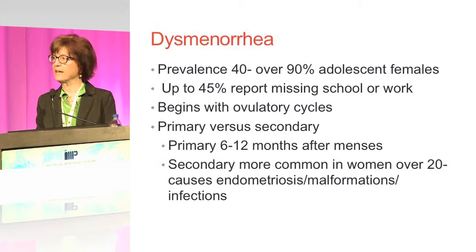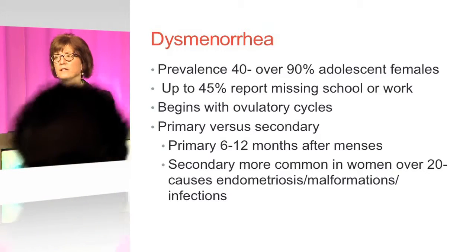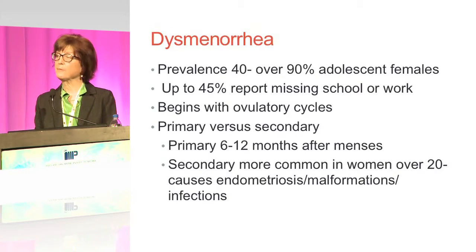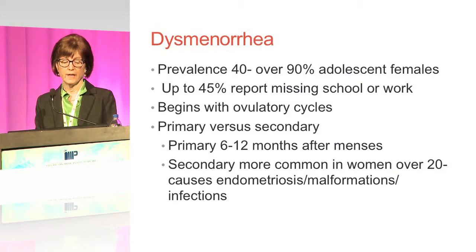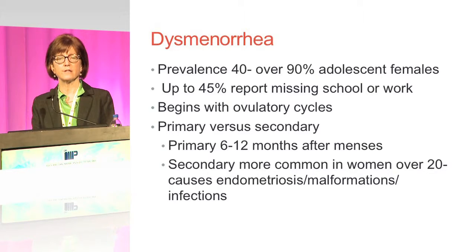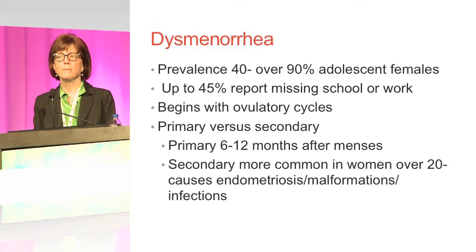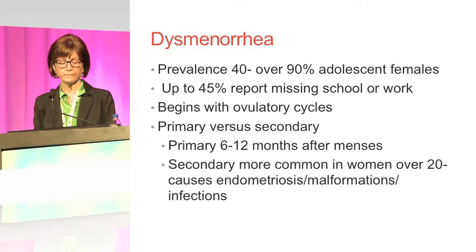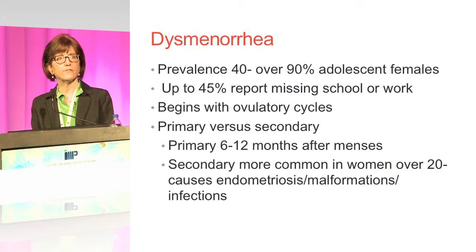Forty to ninety percent of adolescent females will complain of dysmenorrhea at some point during their adolescent life, and up to forty-five percent report missing school or work. It happens after a girl has started her period for about six months, meaning it occurs in young women who have been menstruating for about six months and then begin ovulating. So the initial part of the menstrual cycle may not be painful, but after ovulation begins, the cramps start.